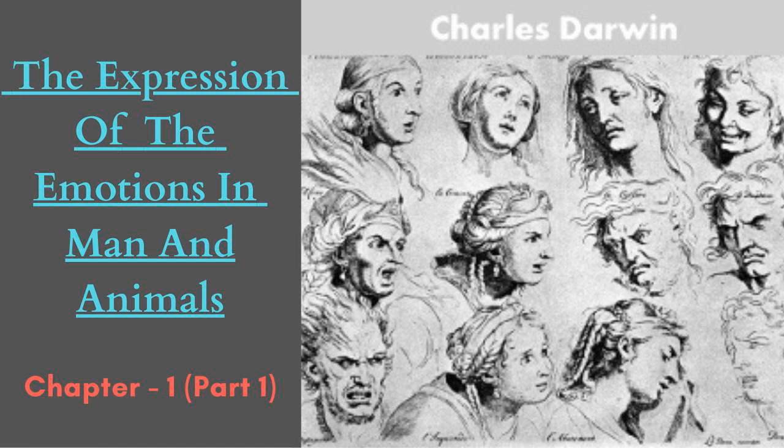I will begin by giving the three principles which appear to me to account for most of the expressions and gestures involuntarily used by man and the lower animals under the influence of various emotions and sensations. I arrived, however, at these three principles only at the close of my observations. They will be discussed in the present and two following chapters in a general manner. Facts observed both with man and the lower animals will be made use of, but the latter facts are preferable as less likely to deceive us.